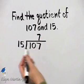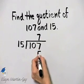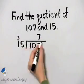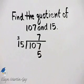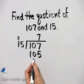7 times 15, well 7 times 5 is 35. Carry the 3. 7 times 1 is 7 plus 3 is 10. 105.